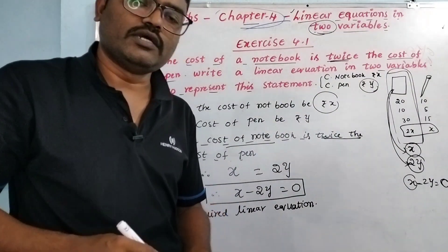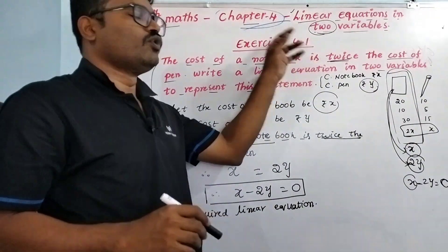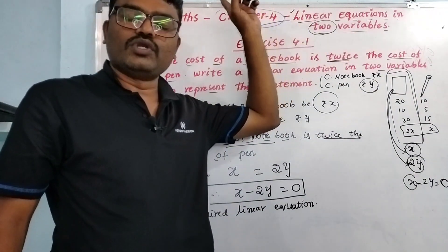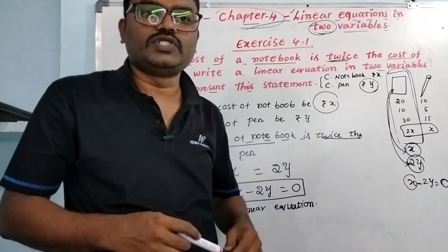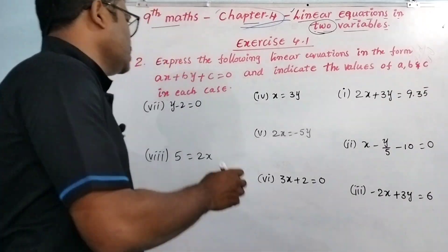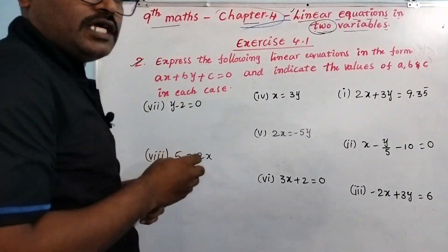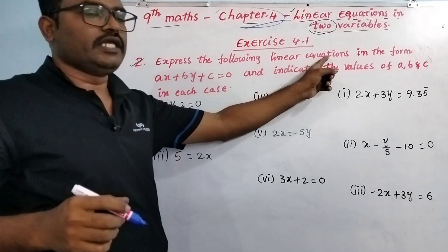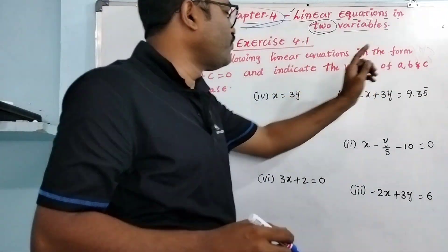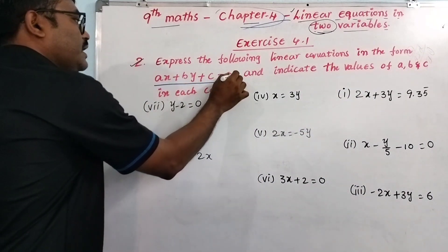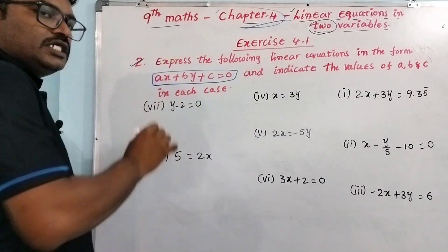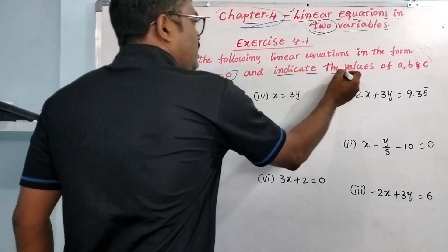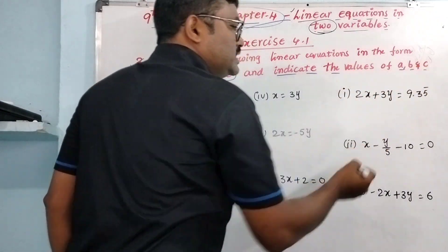Now let's see question number 2 of Exercise 4.1, Chapter 4, Linear Equations in Two Variables, Class 9 Mathematics. The question here: Express the following linear equations in the form ax + by + c = 0, the standard formula. And indicate the values of A, B, and C.